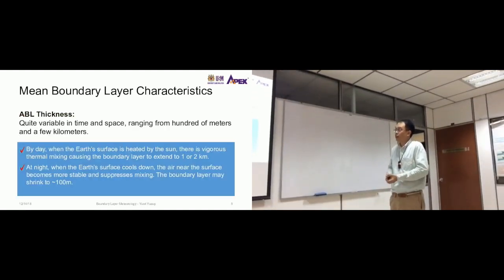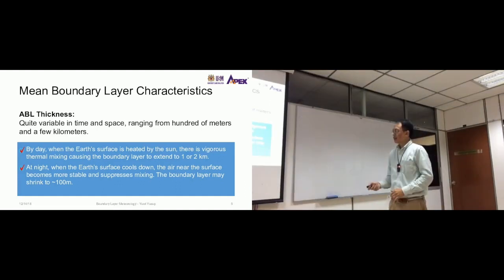First thing we need to consider is how thick the atmospheric boundary layer is. This thickness is about one kilometer in height, but they vary quite a bit in time and space. It could range from just a few hundred meters to a few kilometers, and that would change depending on the time of day. By day when the earth's surface is heated by the sun, it's warm at the surface. There is vigorous thermal mixing, which causes the boundary layer to extend up to one or two kilometers.